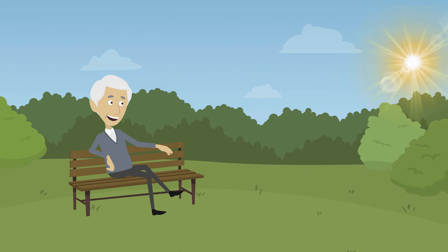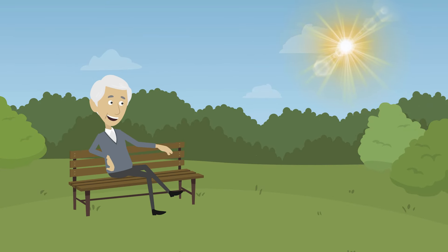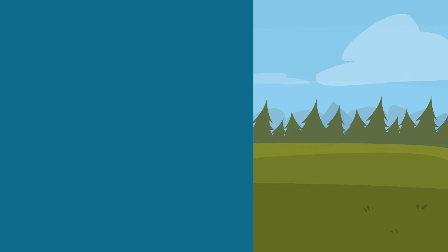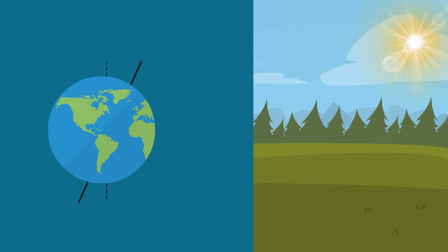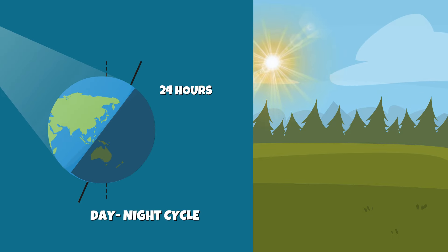At sunrise, the sun appears on the eastern horizon due to our position rotating toward the sun. As Earth continues to rotate, the sun seems to move across the sky, eventually setting in the west.